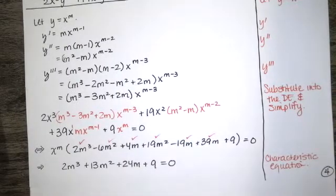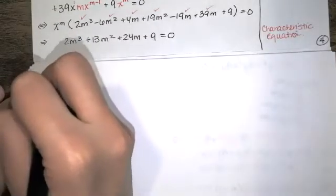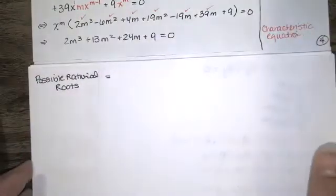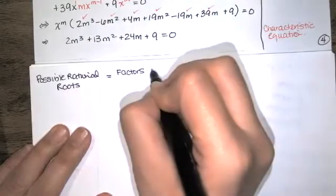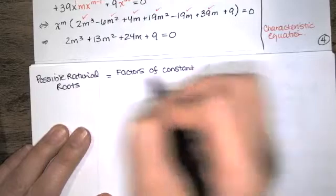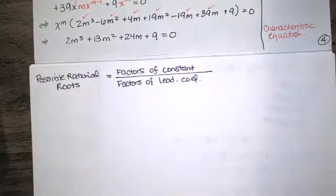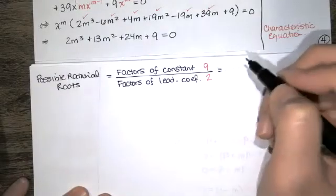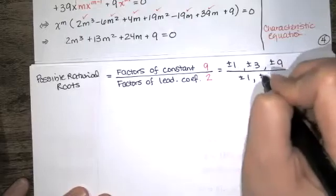I'll use possible rational roots again. We're looking for roots of a polynomial equation. The possible rational roots consist of factors of the constant term divided by factors of the leading coefficient. In our case, the constant is 9 and the leading coefficient is 2. So we take factors of 9 — which are plus and minus 1, 3, and 9 — and divide by factors of 2 — plus and minus 1 and 2.